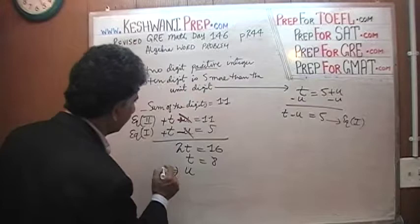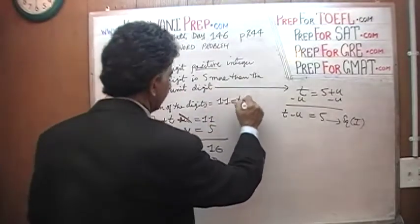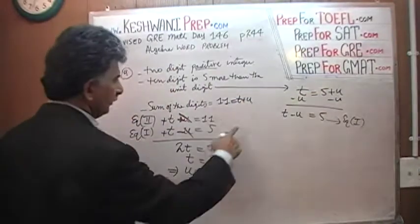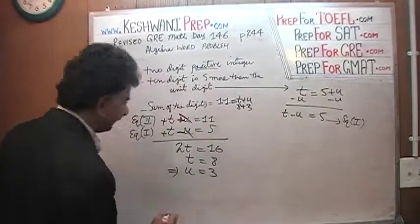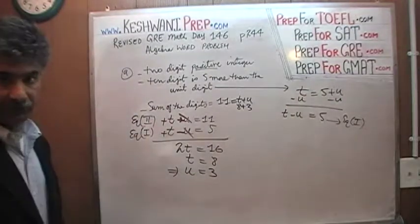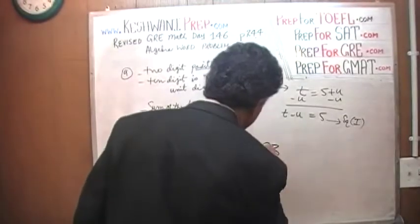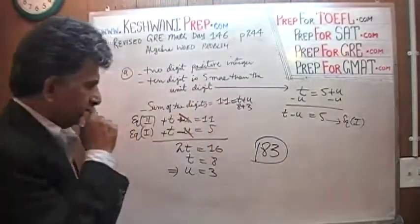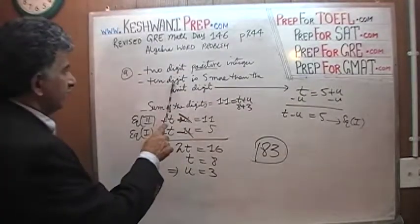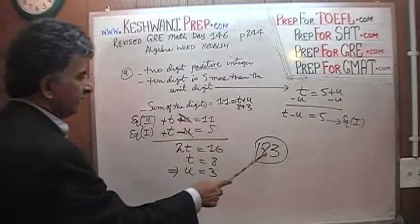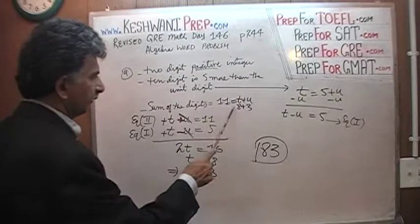If T is 8, then since T plus U equals 11, U must be 3. That's it. T represents the tens digit and U represents the units digit, so the integer in question is 83. As you can see, the tens digit 8 is 5 more than the units digit 3, and the sum of the digits is 11.